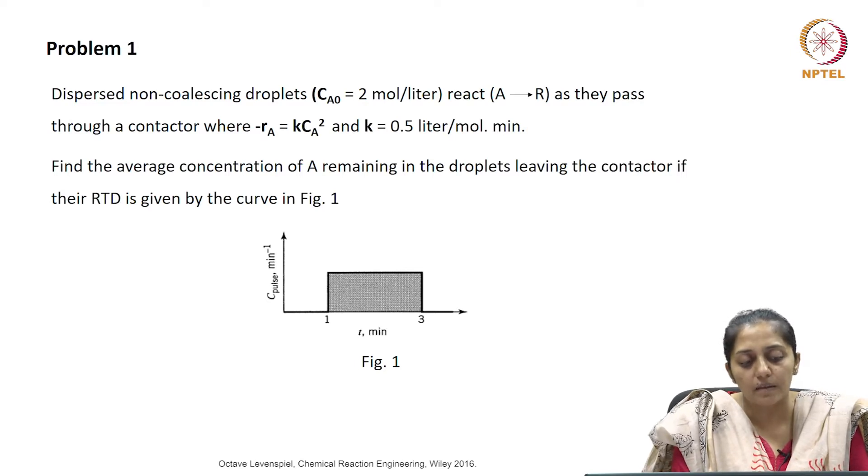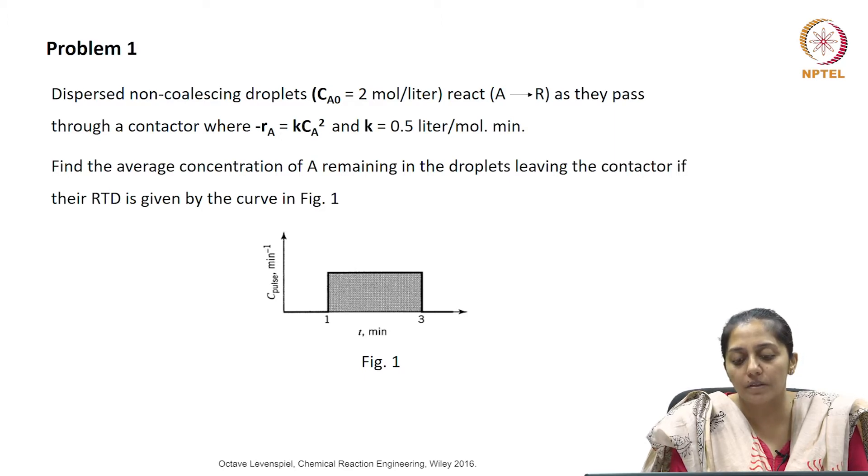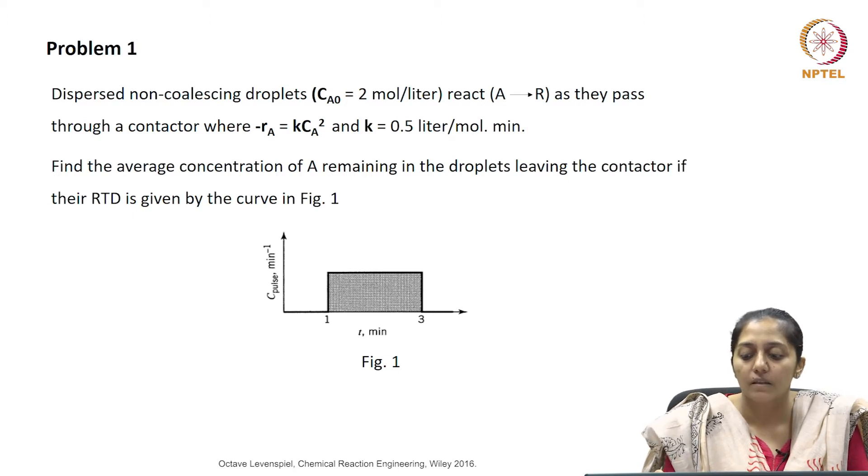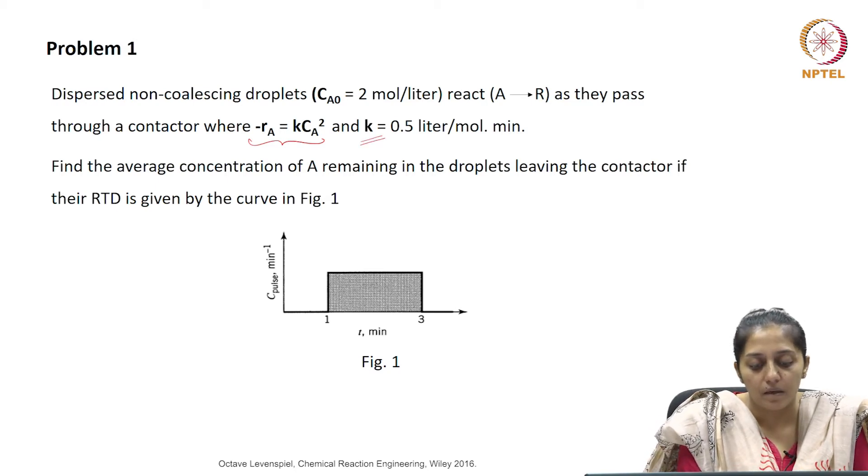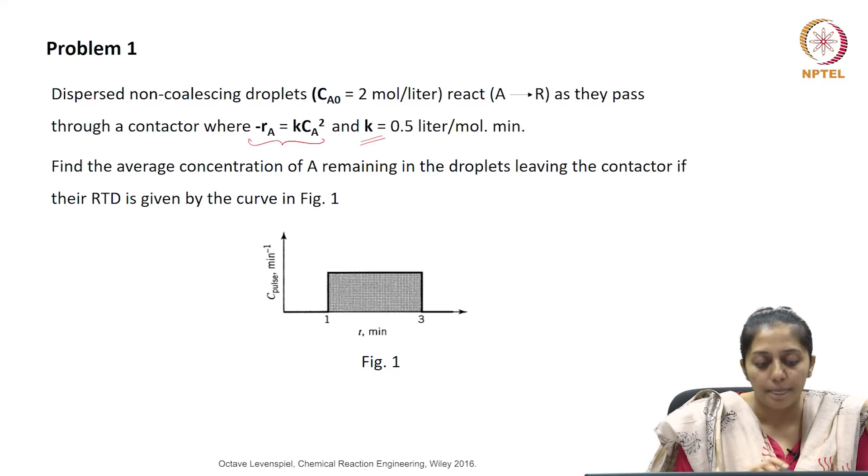The problem states that dispersed non-coalescing droplets with reactant concentration given as 2 moles per liter react to give the product as it passes through a contactor. This contactor follows second order reaction kinetics where the reaction rate constant value is given to us. We need to determine the average concentration of A remaining in the droplets if the RTD is shown here.